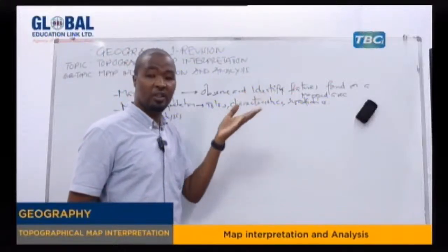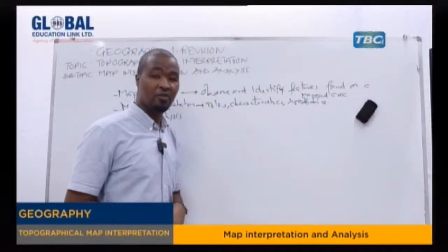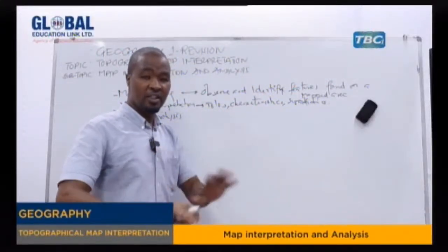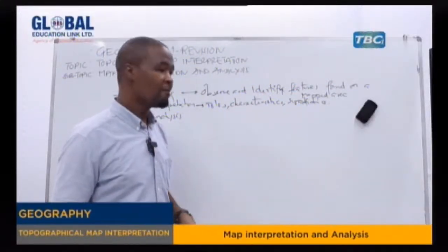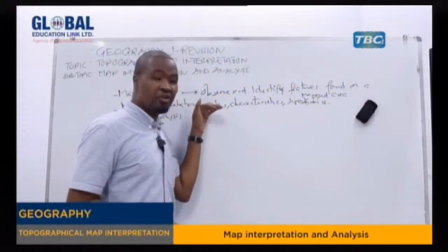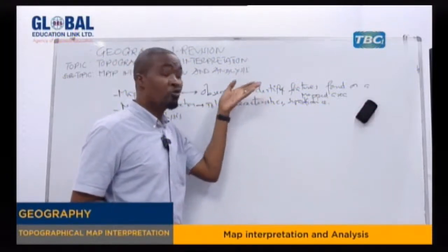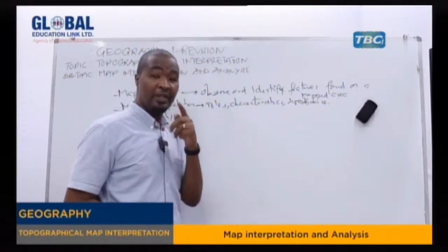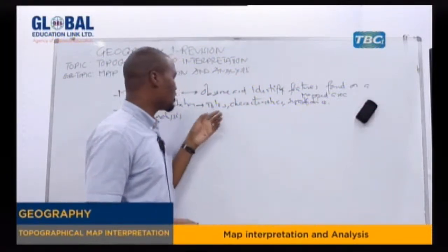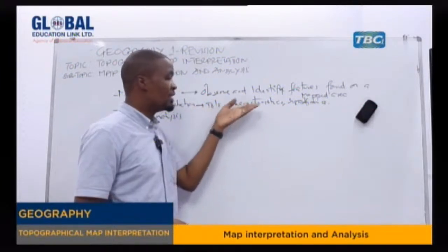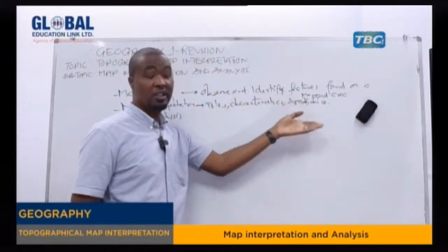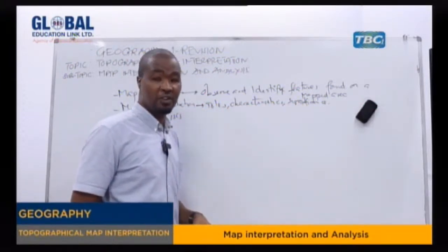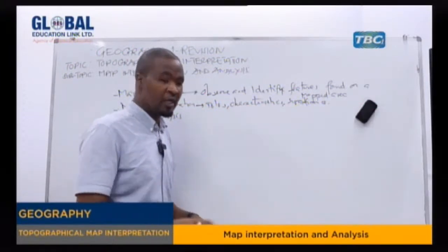Right here, you have just identified the features found on the map area and then you leave it as it is. But right here, you have to identify the features found on the map area, then you have to explain the role, the characteristics, and the significance of those features found on the map area.